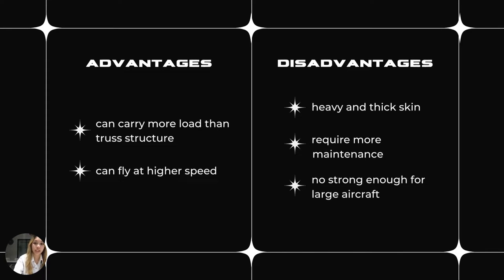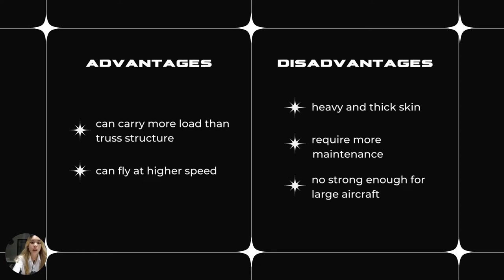Advantages and disadvantages of monocoque structures: monocoque structures can carry more load than truss structures and can also fly at higher speed. However, the disadvantage is that they require heavy and thick skin because they have to be very strong. Monocoque structures require more maintenance and are not strong enough for large aircraft. Overall, the advance of monocoque structures was a major breakthrough in the development of aircraft structures.